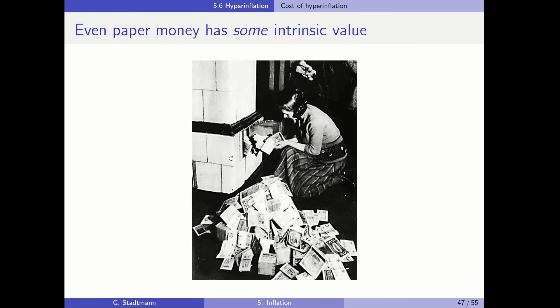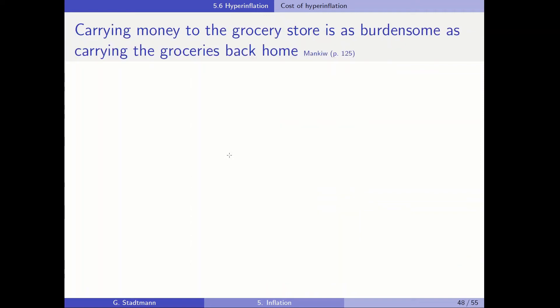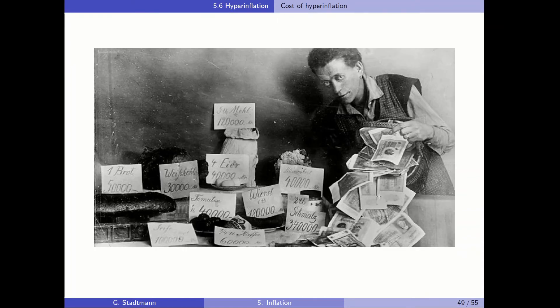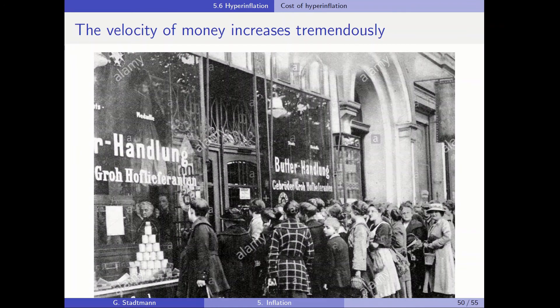Please have a look here. Like when you put the paper money into the oven, you at least can heat this oven. In the textbook, it is also mentioned that carrying money to the grocery store is as burdensome as carrying the groceries back home. You can see here one picture which highlights that this is indeed the case. When you go to the grocery, you also have to carry a lot of money with you in order to pay for your groceries. Like here you can see a picture taken from the grocery store. Like four eggs, they cost 40,000 marks. One bread 50,000 marks. The prices are very, very high.